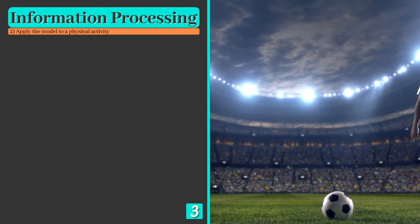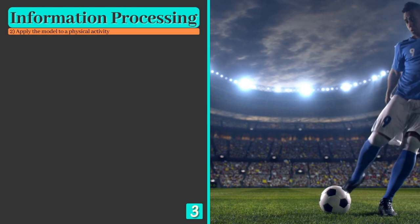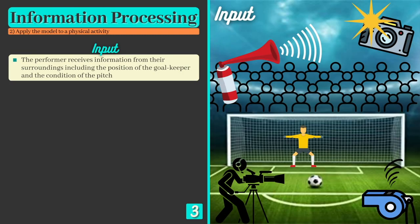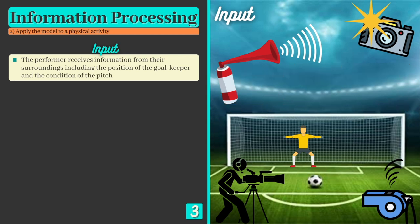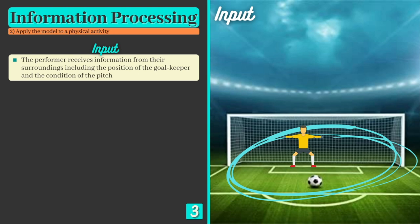Now let's move on to our second learning objective, which is to apply the information processing model to an example from sport, which in this case is taking a penalty kick. At the input stage, the player receives information from their surroundings but focuses only on the most important bits, including the ball, pitch, goalkeeper and the goal itself.